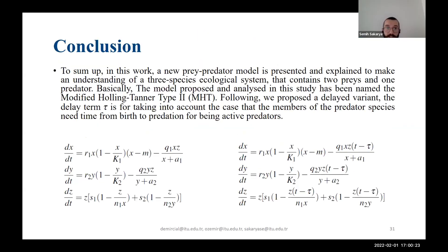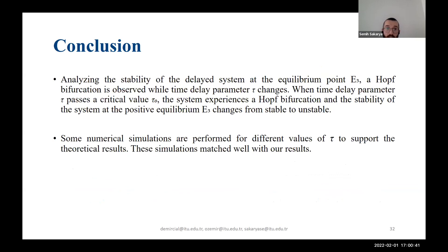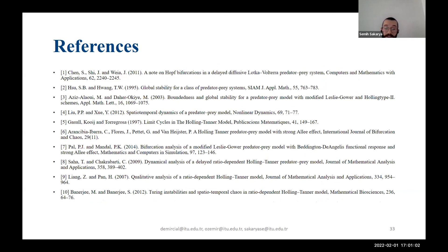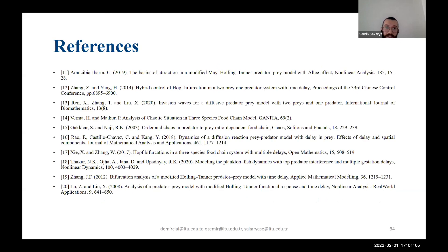In conclusion, in this work we established a new prey-predator model named the Modified Holling-Tanner Type 2 model. We analyzed the stability conditions of this model as well as the delayed version. We obtained the stability conditions and also the conditions of the Hopf bifurcation, and supported our findings with numerical simulations which matched our theoretical results. Thank you for listening.